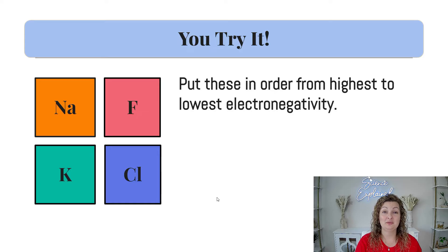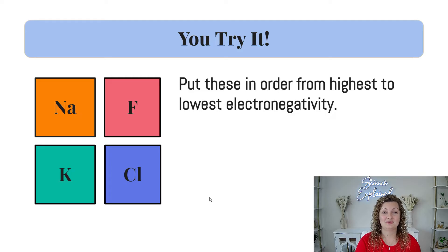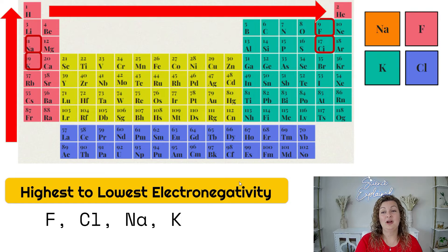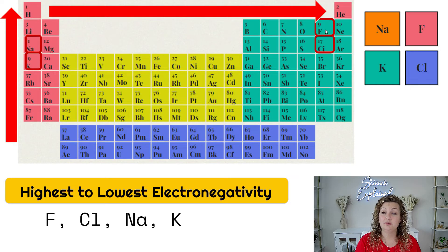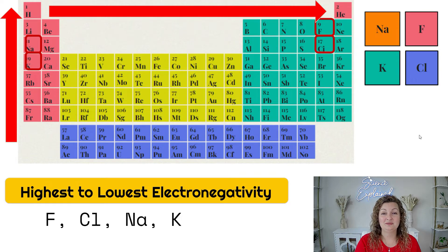Now I want you to give some a try. Go ahead and pause your video and put these in order from highest to lowest electronegativity. Let's go ahead and check the answer. I went ahead and outlined these for you on the periodic table, and you can see that our highest electronegativity is going to be fluorine, then chlorine, then sodium, and then potassium.